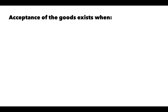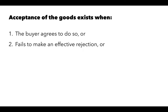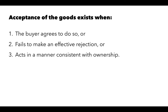Acceptance of the goods occurs when: first, the buyer expressly agrees to accept — the buyer says 'I accept the goods'; second, the buyer fails to make an effective rejection as required by the contract or by the UCC, in which case the buyer is deemed to have accepted the goods; or third, the buyer acts in a manner consistent with ownership, which is also evidence of acceptance. A buyer can accept only those goods that conform to the contract and reject the rest.